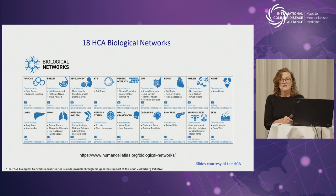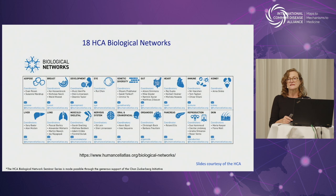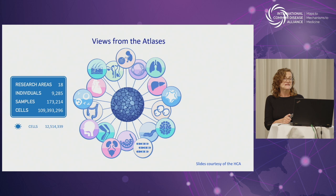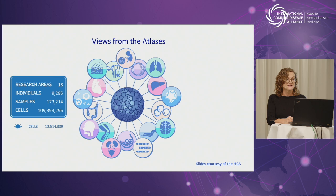The HCA is a rapidly growing global and open scientific community, spanning 83 countries, 1,300-odd institutes, and 2,400-odd members — anyone can join. It's organized as a series of biological networks largely focused on specific organs: the heart, liver, lung, and so on. There are a few exceptions including a pediatric and developmental network, and the Genetic Diversity Bionetwork led by Cheyenne Prabhakar. The HCA atlases currently stand at 18, spanning 9,000 individuals, 173,000 samples, and over 109 million characterized cells.